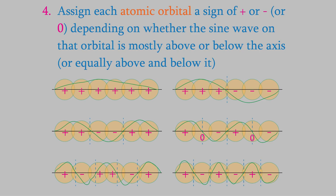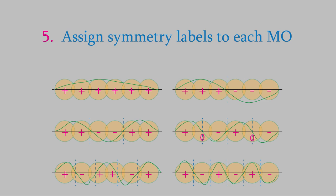Now we can give the MOs a symmetry label. Each orbital is connected by sigma bonds, so that's the first part of the symbol. The signs in the first MO are symmetric with respect to the center of the molecule, so it gets a subscript g. The signs in the second MO are opposite with respect to the center of the molecule, so this is an ungerade orbital and it gets a subscript u. When we do this for the rest of the MOs, here's what we get.